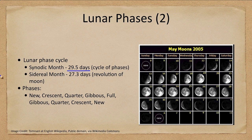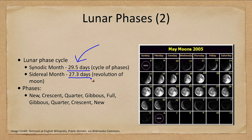Now let's look at the timing. The cycle of phases is 29 and a half days. We mentioned that previously when we talked about our month — where does our month come from, being approximately 30 days? It is because the moon's cycle of phases is very close to 30 days. However, the actual revolution period of the moon is a little bit less than that.